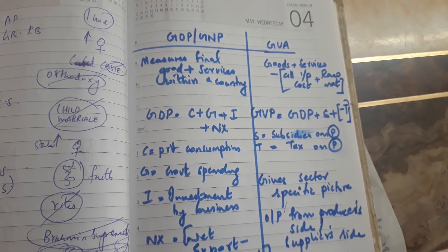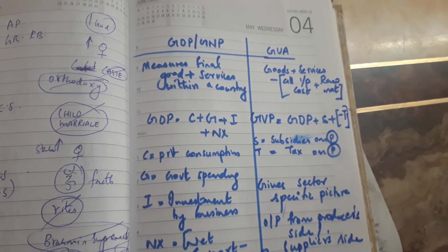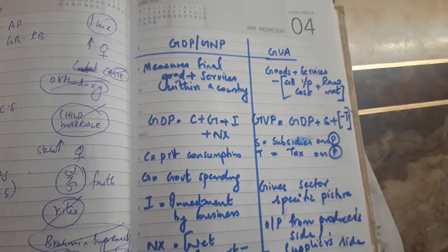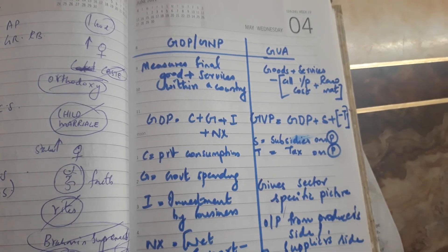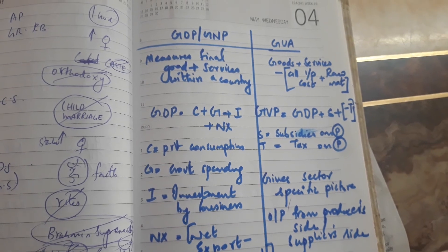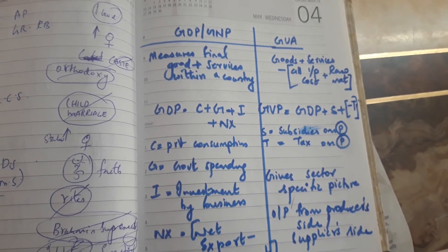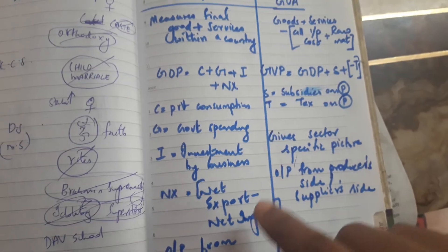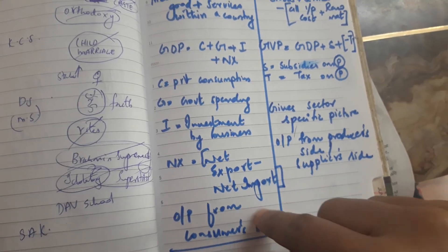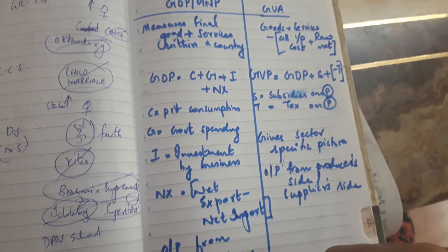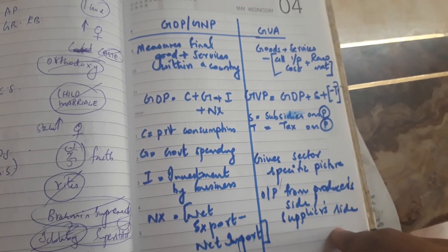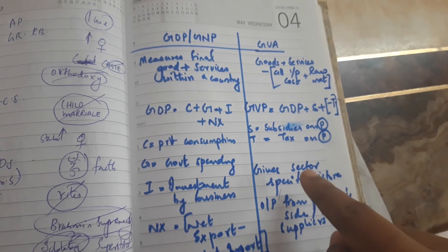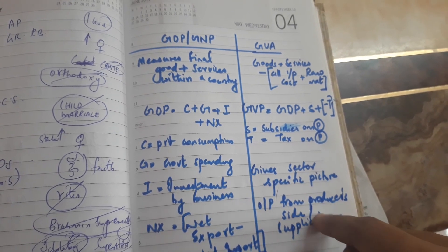From an industrialist's point of view, GVA shows how much growth there is — they minus out all the input cost and raw materials to find the gross value added. GDP, on the other hand, is the output from the consumer's side, whereas GVA is from the producer's side. That is the difference between GVA and GDP.